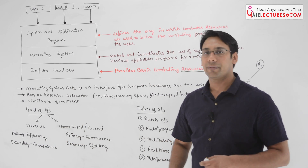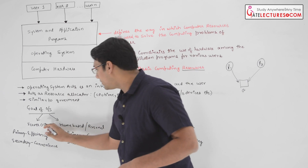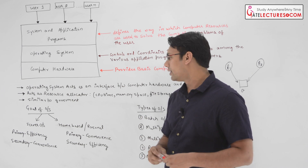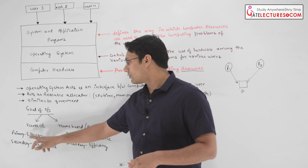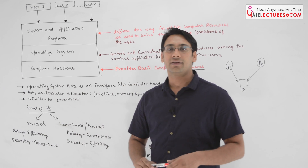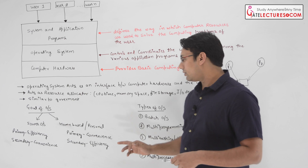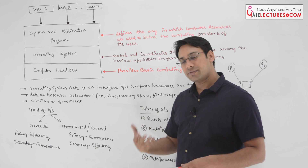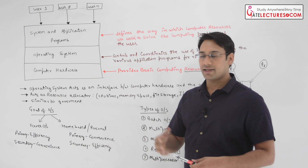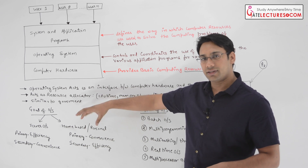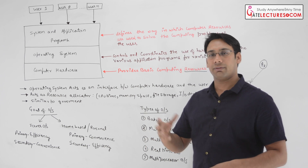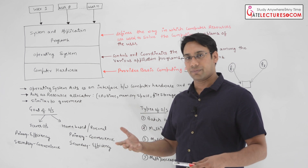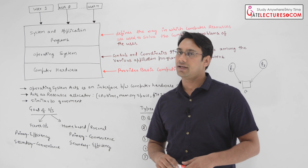We have two types of operating system. Number one: a server operating system. Number two: an operating system for the personal or home-based user. For a server operating system, the primary goal is efficiency and the secondary goal is convenience. But for a home-based or personal operating system, the primary goal is convenience and the secondary goal is efficiency. This question has been asked many times in examinations — I believe it was asked in DRDO — about what the goal of the operating system is.